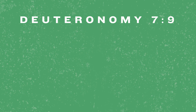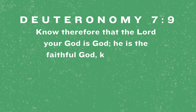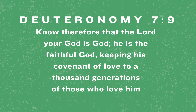Let's go back and repeat our memory verse. Deuteronomy 7:9 — Know, therefore, that the Lord your God is God. He is the faithful God, keeping his covenant of love to a thousand generations of those who love him and keep his commandments.